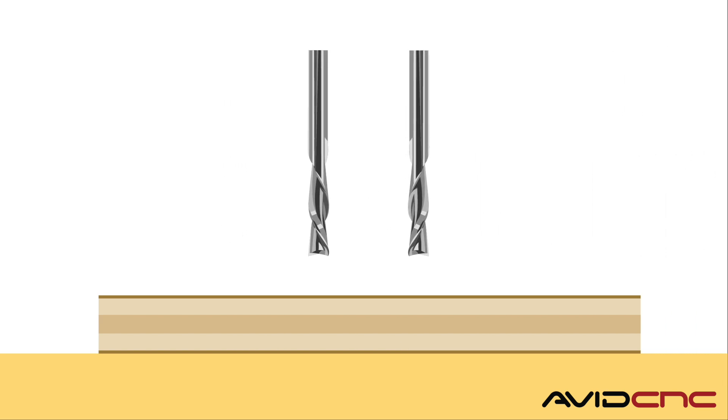First, we'll discuss down cut and up cut router bits. Determining the difference between these two can be difficult at first, so here's a quick method to know which one you have for sure. Hold the bit in front of you—it doesn't matter whether the tip is facing up or down—and follow the flutes with your eyes as they move from left to right.